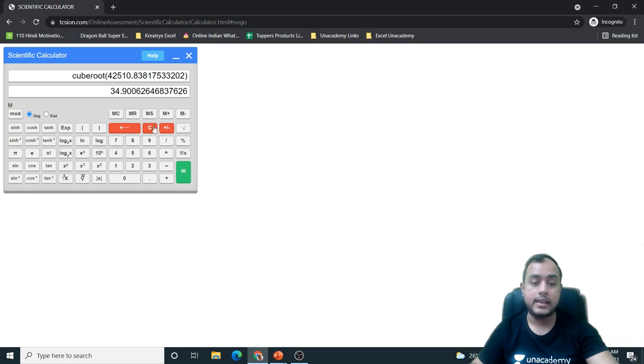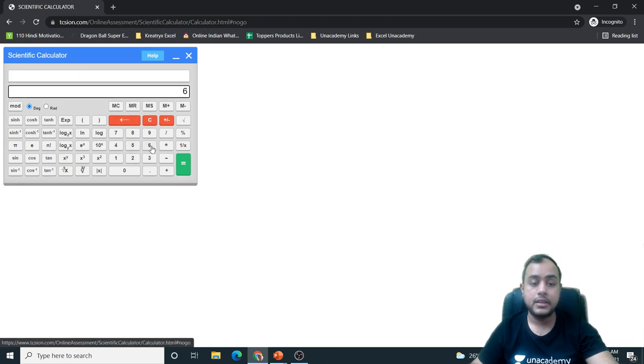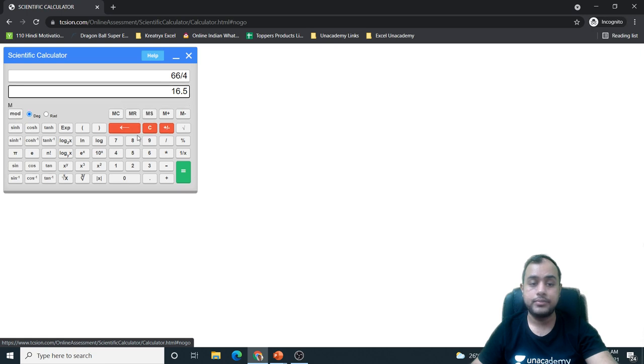66 by 4. I will clear. I will clear the memory. 66 by 4. I will calculate it. Store. Then 8 by 31. I will add it into the memory. 5 by 13. Press equal to M plus.